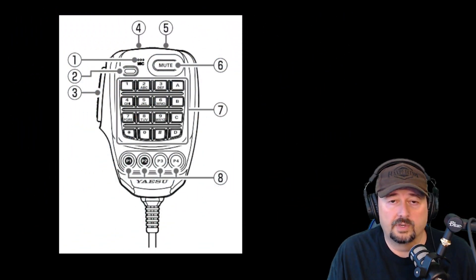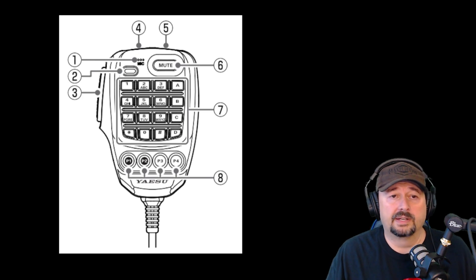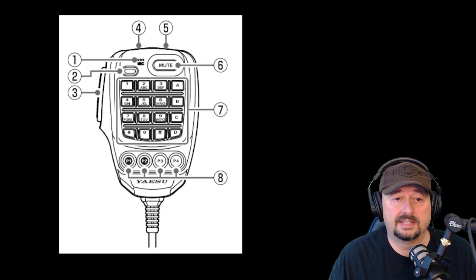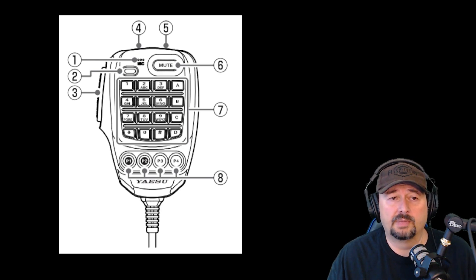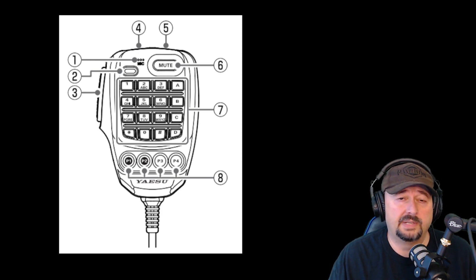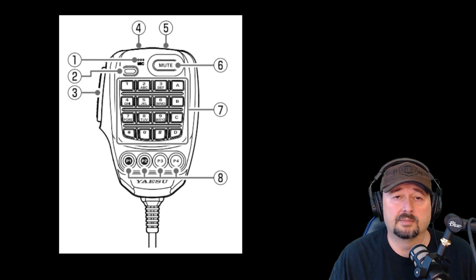The first thing I wanted to do is take a look at this image from the user manual — a close-up of the actual handheld microphone. You can see number 8 at the bottom, which are those four buttons. You also have your microphone, a flashing light to indicate mode and when you're transmitting, a mute button, up and down keys at the top (numbers 4 and 5), and your numeric keypad which is number 7.